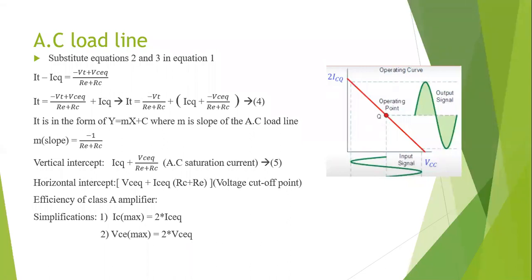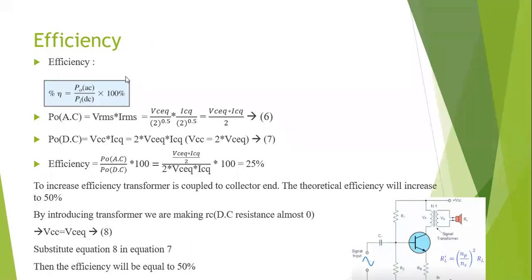By considering these two simplifications we can find the efficiency of this power amplifier. The efficiency is defined as the ratio of output AC power to input DC power. The formula for output AC power is V(rms) multiplied by I(rms). Substituting the equations we derived, we can see that the efficiency achievable is 25 percent.